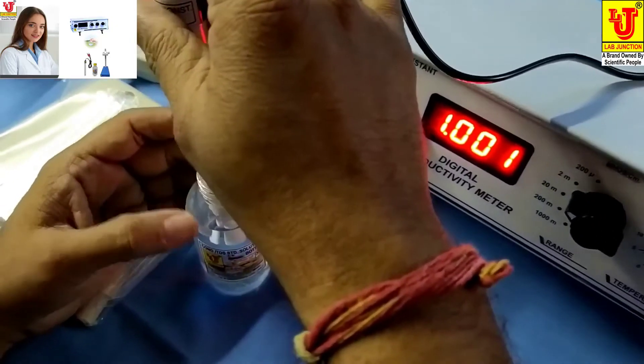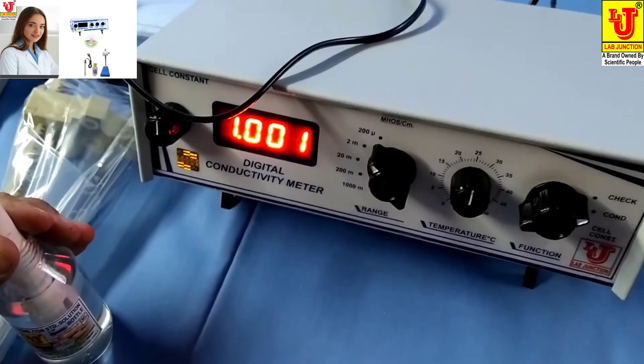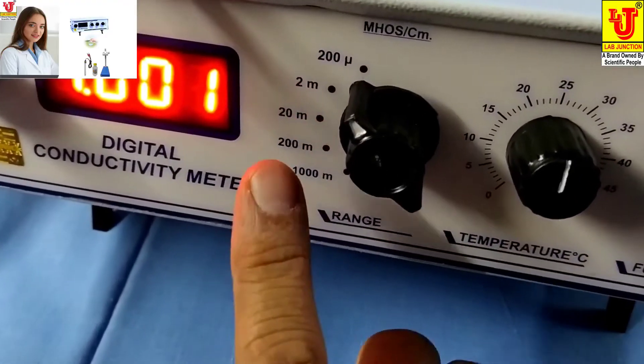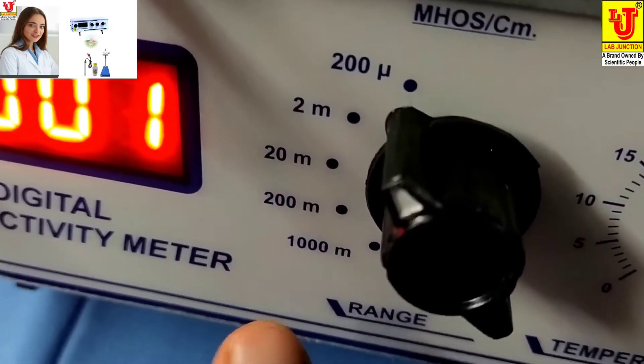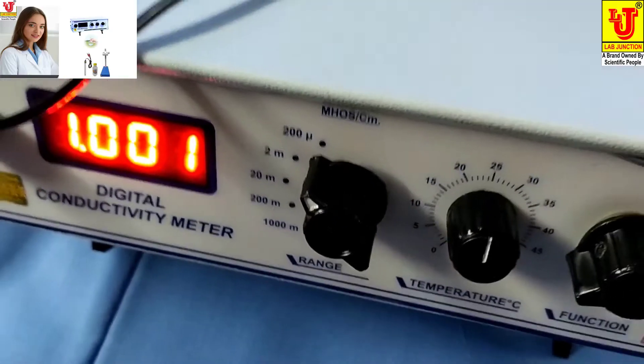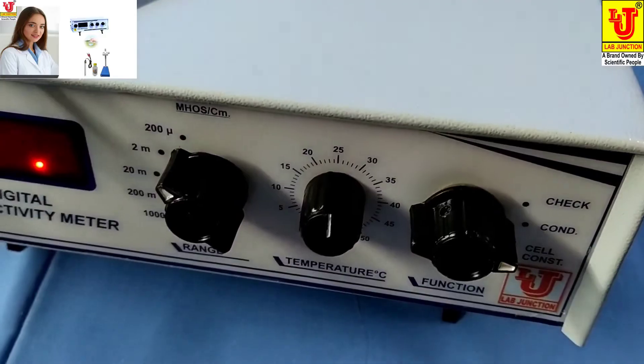You can dip it in. The range settings are: first range 200 microsiemens, second is 2 milli, third is 20 milli, fourth is 200 milli, fifth is 1000 millisiemens. Now you can set it to conductivity position.